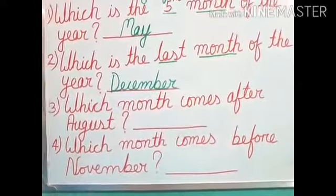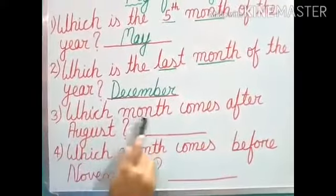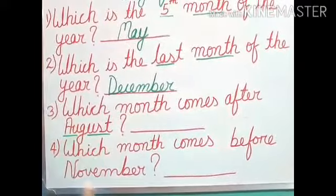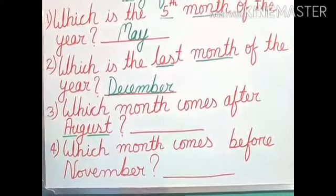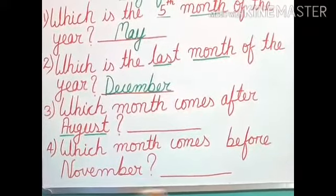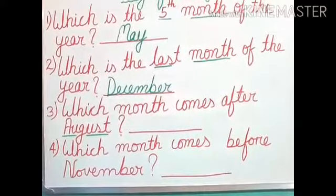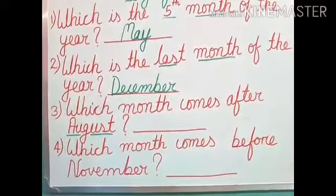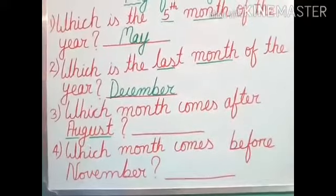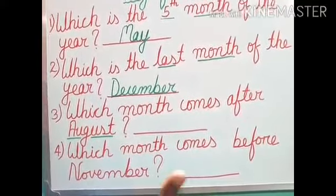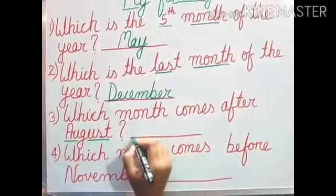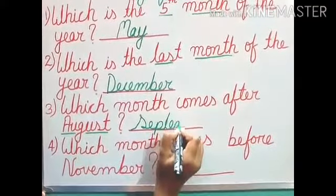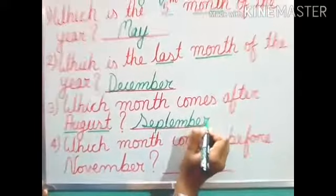Number 3: Which month comes after August? Let us count — January, February, March, April, May, June, July, August. After that? September. So after August, the month coming is September. We will write here September.